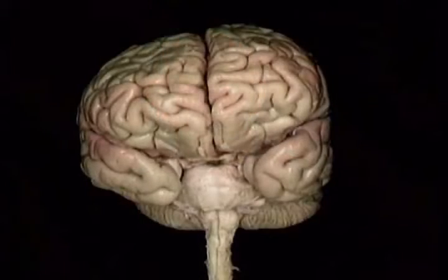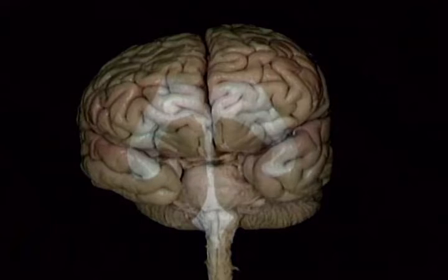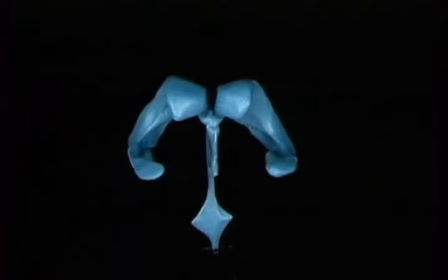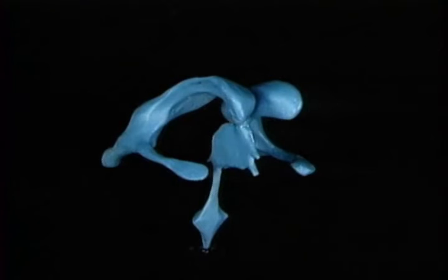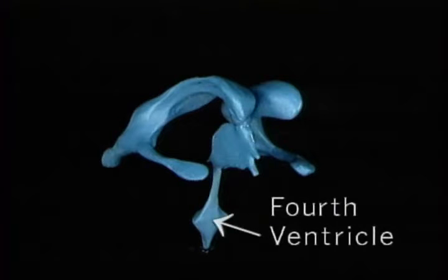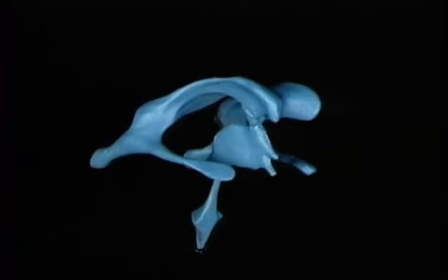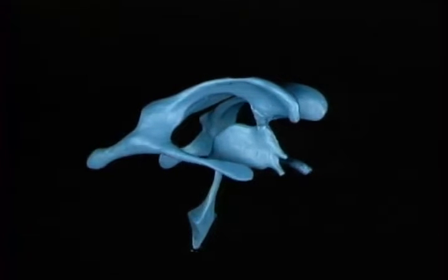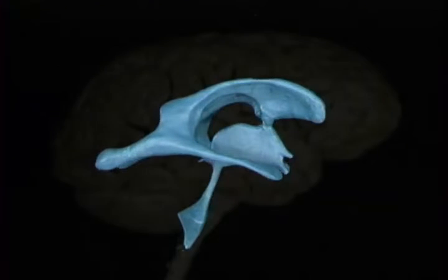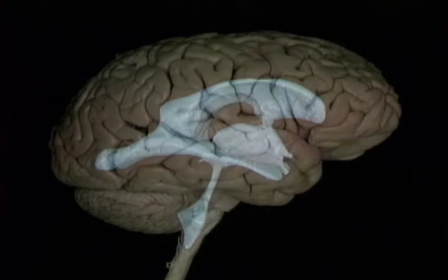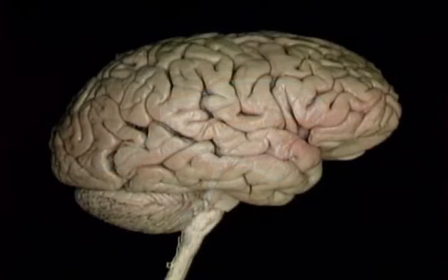Now we'll move on to look at the brain. The internal structure of the brain, which is extremely complex, lies outside the scope of this atlas. In this section we'll look at the main external features of the brain and also at the cavities within it, the ventricles. This model shows the shape of the ventricular system, formed by two small cavities in the midline — the third ventricle and the fourth ventricle — and two much larger lateral ventricles, which connect to the third ventricle. The ventricles are filled with cerebrospinal fluid.